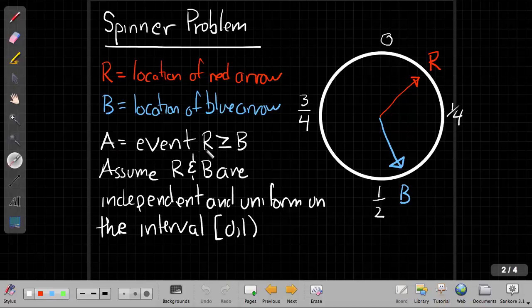And we're going to look at the event A is the event that the red spinner is greater than blue. So I guess the example I drew here is the opposite. This is an example or an outcome that would be in this space A complement. R in this picture is less than B because R looks like it's about an eighth, and B is just under a half. So B is actually bigger.